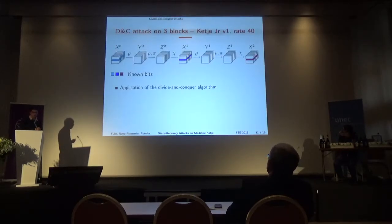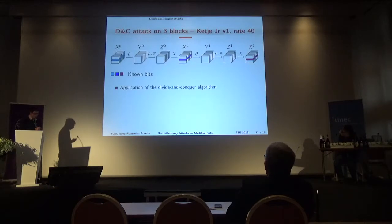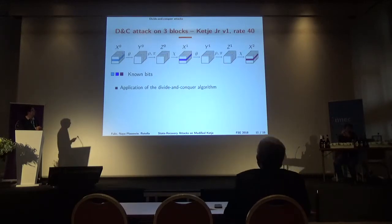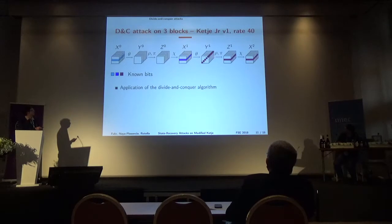For 3 consecutive outputs of KETJER Junior version 1 with a rate of 40, we know 40 bits at the first output, 40 bits at the second, and 40 bits at the third. First, since chi works row-wise, we can partially invert chi and thereby know 40 bits of the state before chi. We can also invert the rho and iota operations.